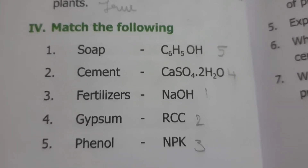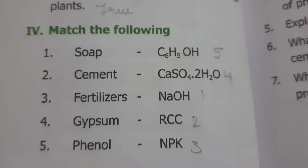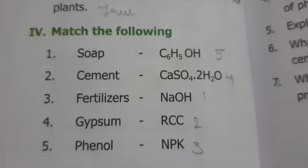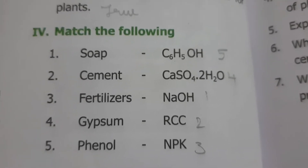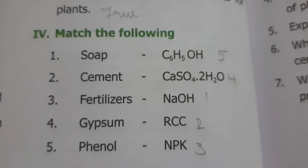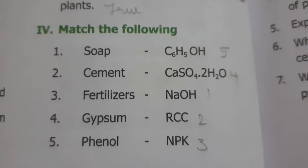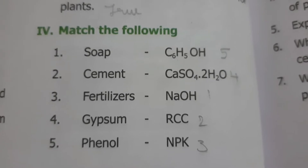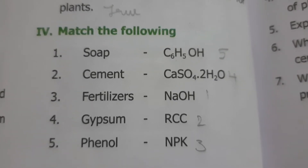Cement - the answer is RCC. Fertilizer - NPK, primary nutrients for plants. Gypsum - formula is CaSO4·2H2O, calcium sulfate dihydrate.